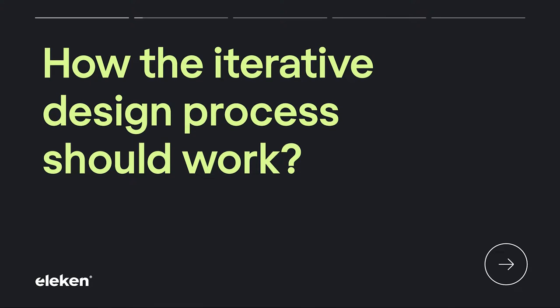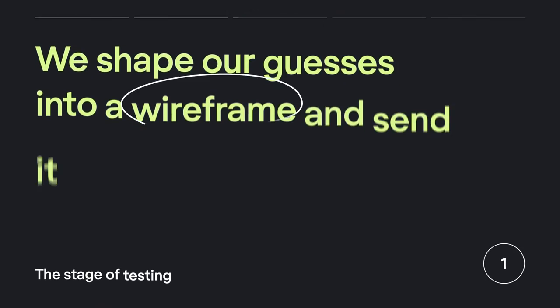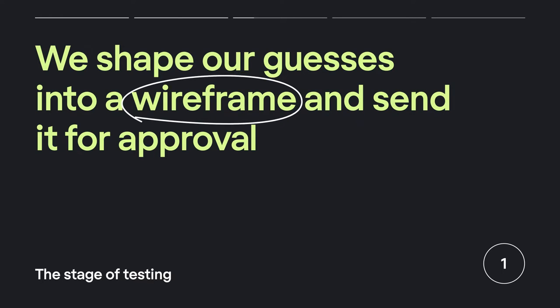Here's how the iterative design process should work. First, you need to split the scope of the project into tiny bits. In UI/UX, we usually iterate user flows one by one. Each iteration goes through three stages: creation, testing, and evaluation. We take the first flow, make a guess on how it's going to work based on our initial research, then shape our guesses into a wireframe and send it for approval to the PM, tech lead, or whoever is responsible. That's the stage of creation.